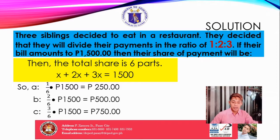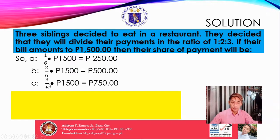These are the amounts of their share. For each share: 1 over 6 for sibling 1, 2 over 6 for sibling 2, 3 over 6 for sibling 3. How do we get 6? That is the total share. So we have 250 pesos, 500 pesos, and 750 pesos as their corresponding payments, corresponding to the ratio of 1 to 2 to 3.